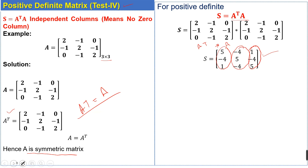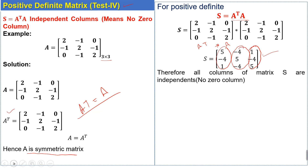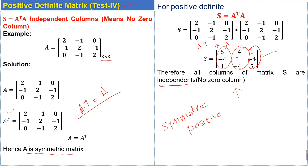Since there is no zero column, this means all columns of matrix S are independent. Therefore, the given matrix is a symmetric positive definite matrix.